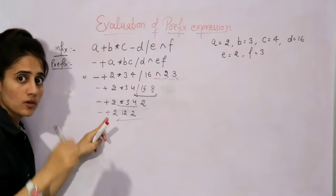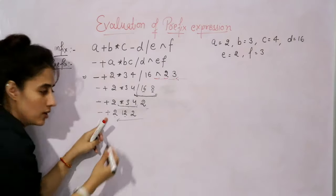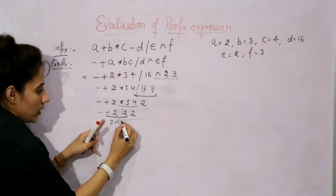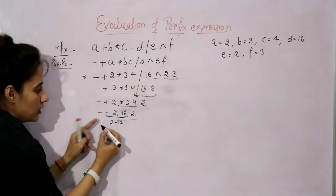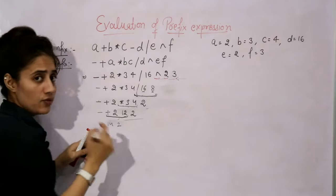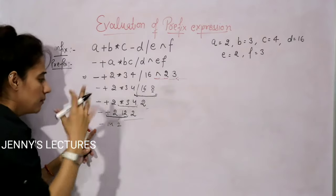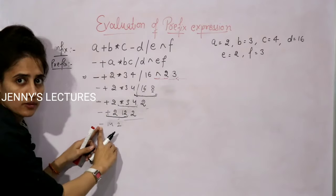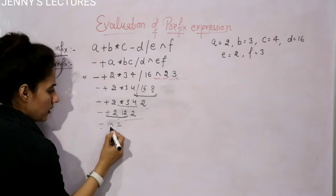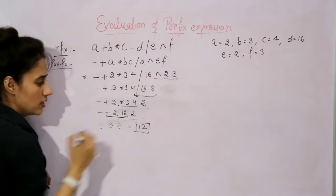In another scan, from right to left, the first operator is plus. The immediate next two operands are two and twelve. So two plus twelve equals fourteen. Now the expression is: the minus operator, then fourteen, then two. For the minus operator, the operands are fourteen and two — that is fourteen minus two, which equals twelve. So now the answer is twelve.